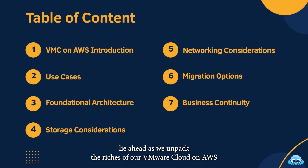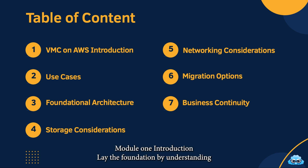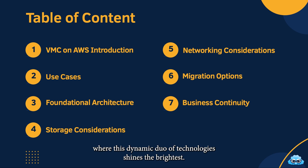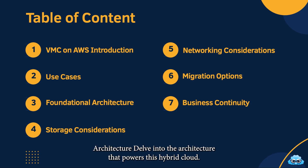Exciting times lie ahead as we unpack the riches of our VMware Cloud on AWS course, carefully crafted into seven comprehensive modules. Module 1, Introduction: lay the foundation by understanding the key concepts and benefits of VMware Cloud on AWS. Module 2, Use Cases: discover real-world scenarios where this dynamic duo of technologies shines the brightest. Module 3, Foundational Architecture: delve into the architecture that powers this hybrid cloud marvel, blending VMware's expertise with AWS infrastructure.